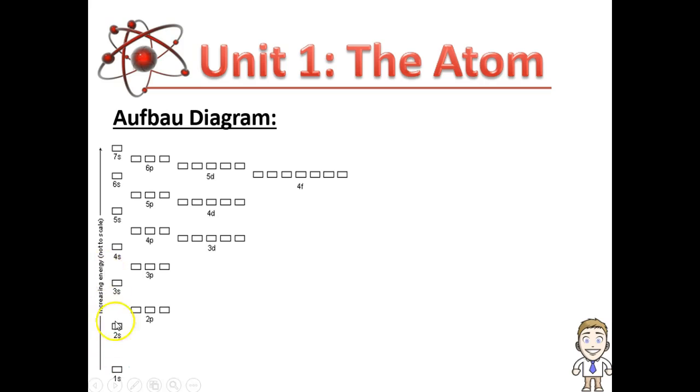The Aufbau diagram simply shows all the different orbitals that an atom can have, s's, p's, d's and f's, and it does it in order of increasing energy values.